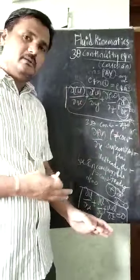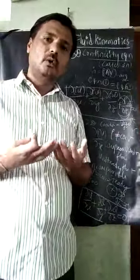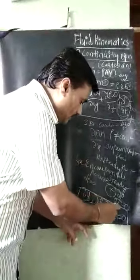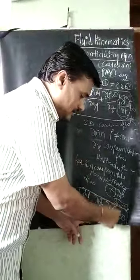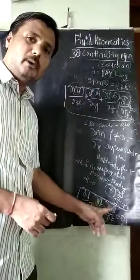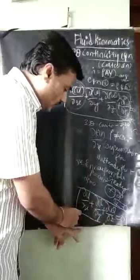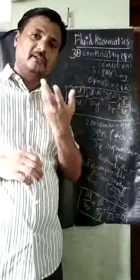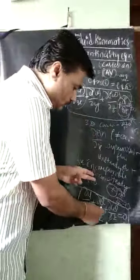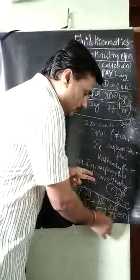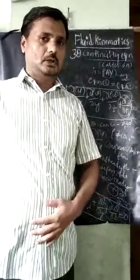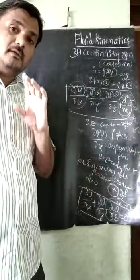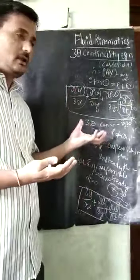This equation can also be written for 2D flow and 1D flow. If the flow is only along the x direction, then ∂v/∂y and ∂w/∂z become 0, leaving only ∂u/∂x = 0. If only 2D flow in x and y exists, then these two terms remain and ∂w/∂z becomes 0. So based on the requirement, we alter this equation accordingly.